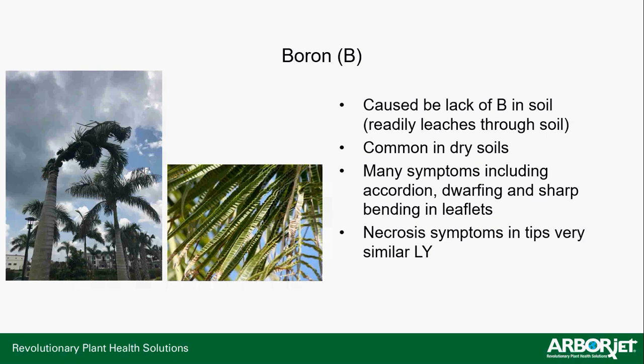Boron deficiency causes some really interesting foliar symptoms. Last week in Vero Beach I came across a foxtail palm with severe boron deficiency — you can see the curling of those fronds. Another symptom of severe boron deficiency is what we call an accordion-type leaflet — seen commonly on queen palms. You can also see leaflets that bend at sharp angles. These are all symptomatic of boron deficiency, and in extreme cases you can even see necrosis.